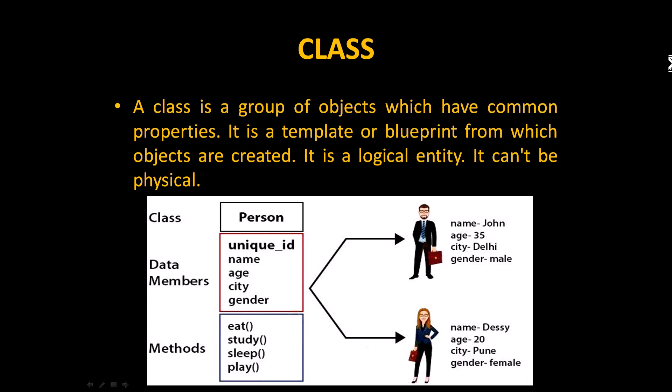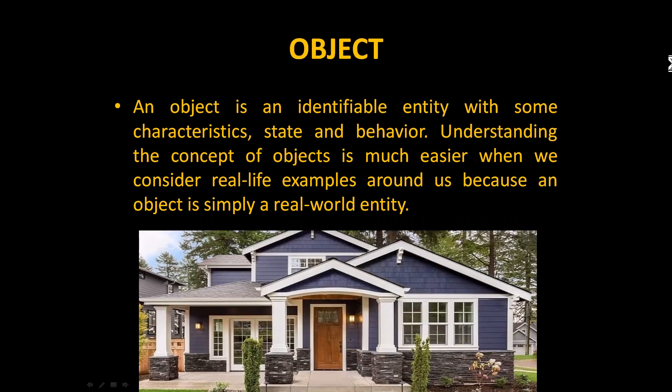Every person will have a name and can be identified by age, gender, and city. They will also have some hobbies, which we can categorize as methods — eat, study, sleep, and play, and so on. You can include any methods you like. In this manner you can identify a class. Let me illustrate with an example.